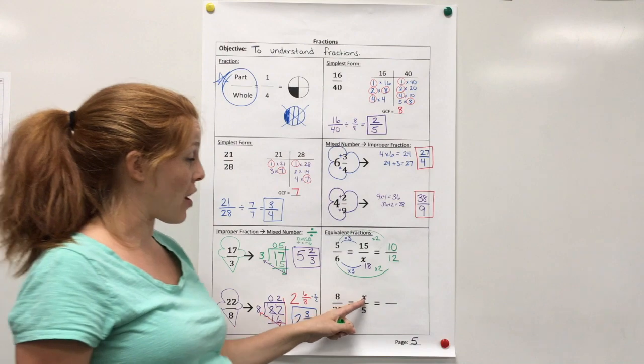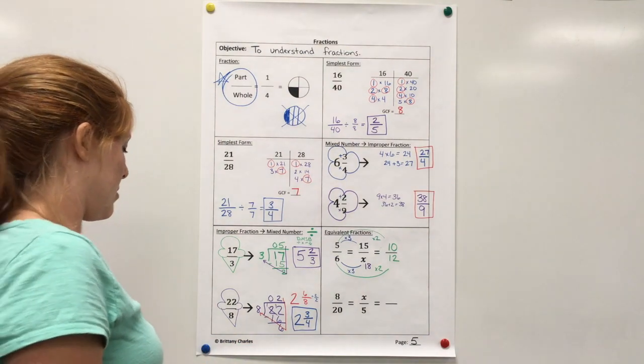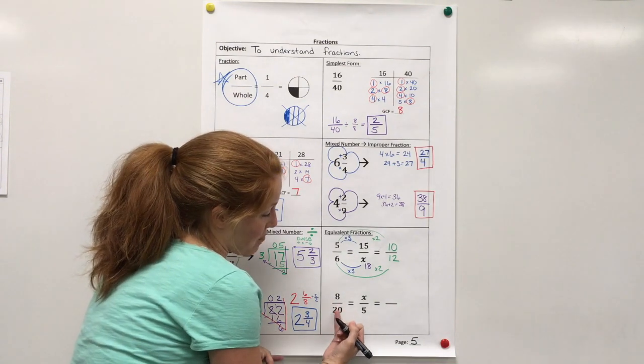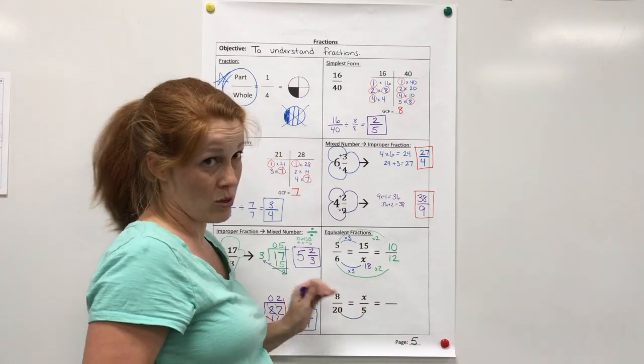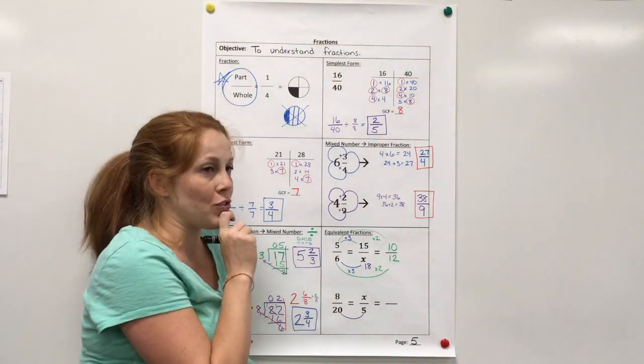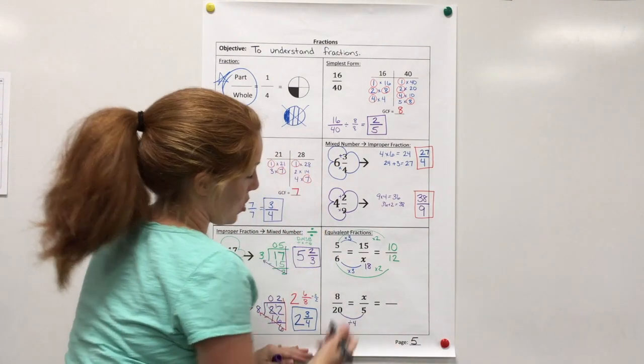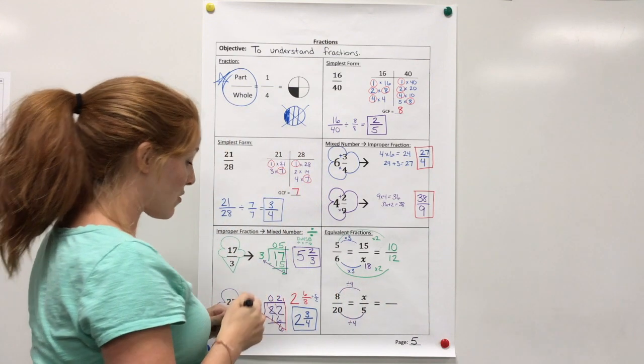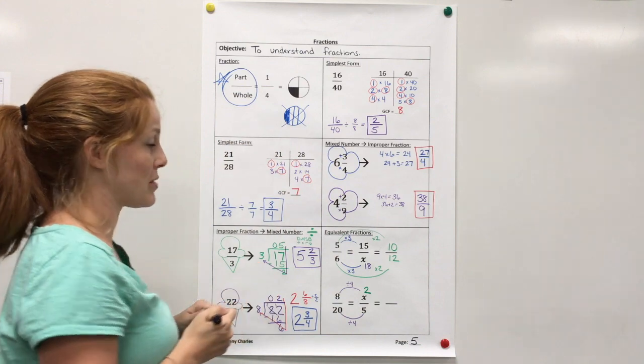All right, go ahead and see if you can figure out what x is, and then we'll create another equivalent fraction. All right, well, I noticed that I have both denominators, so I first need to figure out how I got from here to here. I noticed that it's going down or getting smaller, so that must mean I'm dividing. Okay, so what could I divide 20 by and get 5? Well, I could divide by 4. If I divide by 4, that means I have to divide by 4 here. And 8 divided by 4 is 2. So, x must be equal to 2.